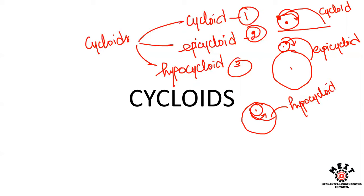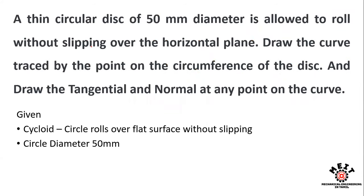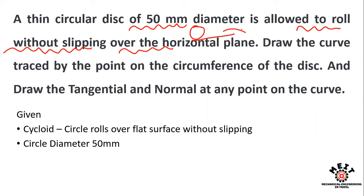The problem: a thin circular disk of 50mm diameter is allowed to roll without slipping over a horizontal plane. We are going to draw the curve traced by a point on the circumference of the disk — that is the cycloid — and then draw the tangent and normal at any point on the curve.